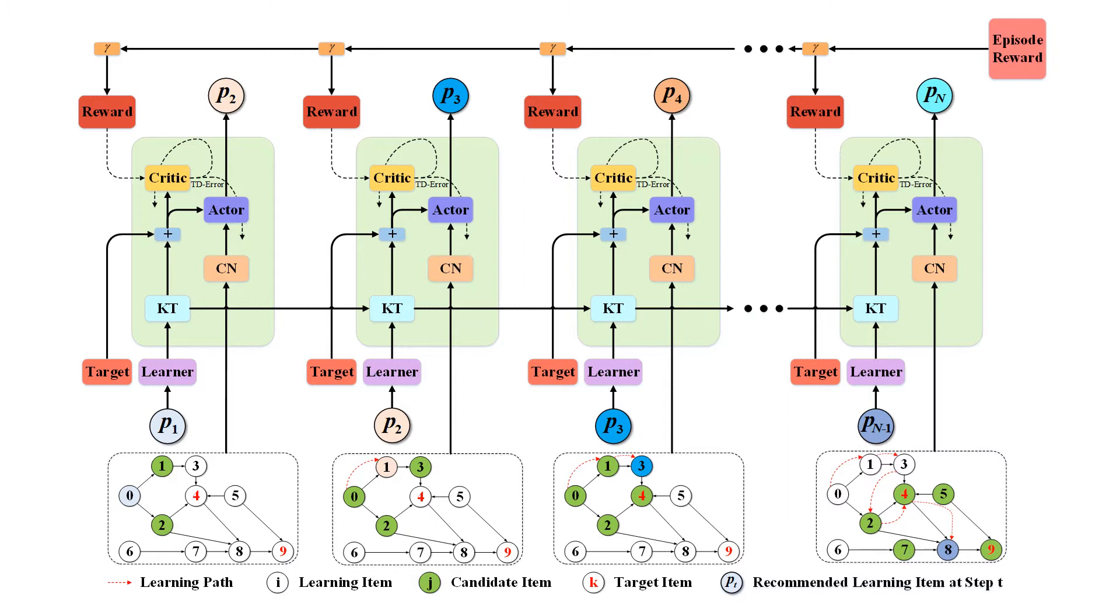To prevent learning paths from violating sequential logicality, the cognitive navigation algorithm is designed to select a certain number of learning items as candidates. To maximize the overall gain along the whole learning path, the actor-critic algorithm, one of the classic reinforcement learning methods, is used which can gradually optimize the recommendation strategy.